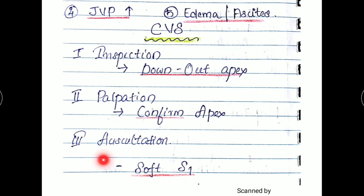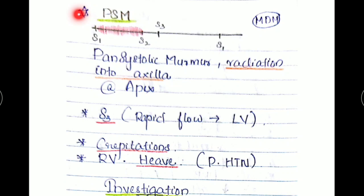In the auscultation, one thing you have to note: our valve is not closing. So the S1 here will be soft, as S1 is the closure of tricuspid and mitral valve. The typical murmur in mitral regurgitation is pansystolic murmur or holosystolic murmur with radiation into the axilla, which can be heard at the apex.